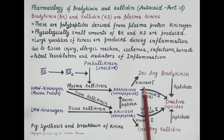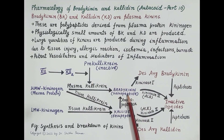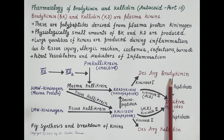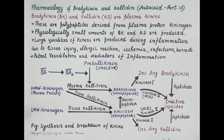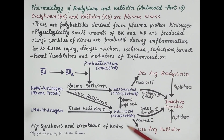Another enzyme, kininase 1, is expressed during inflammation — important to remember that kininase 1 is produced during inflammation. Kininase 1 removes one amino acid, arginine, from bradykinin, converting it to des-arginine bradykinin. The same enzyme removes one amino acid from calidin, converting it to des-arginine calidin. Both these are active metabolites that mediate inflammation; however, they are further metabolized by peptidases to inactive peptides.